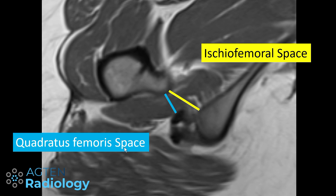First of all, we need to know which region we are talking about. We are talking about the space between the femur and the ischial tuberosity — the ischiofemoral space — which is the minimal distance between the lesser trochanter and the ischial tuberosity. You also hear the term quadratus femoris space, which is the space between the lesser trochanter and the hamstring's origin, with the quadratus femoris muscle running through both spaces. Any changes, edema, or fluid collections around this level should raise our suspicion of ischiofemoral impingement.